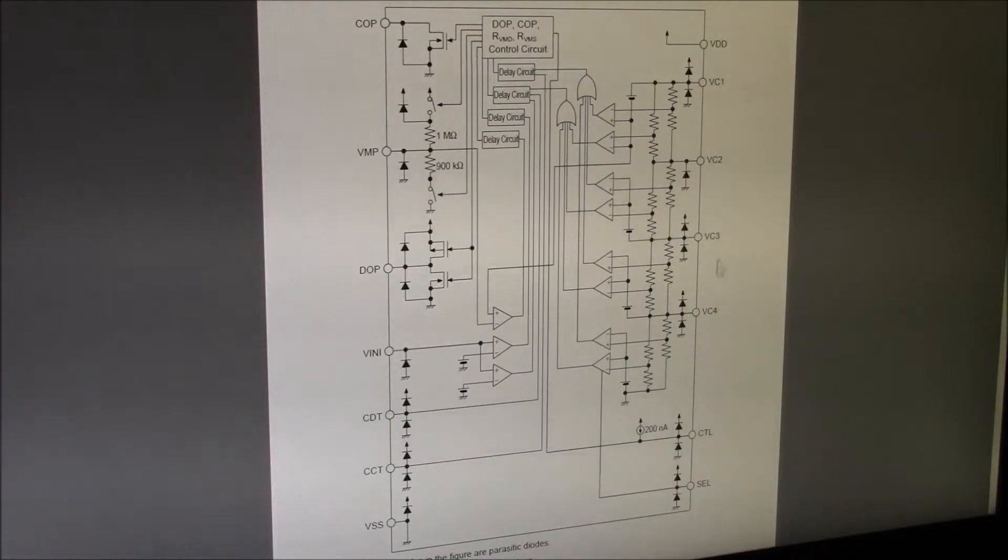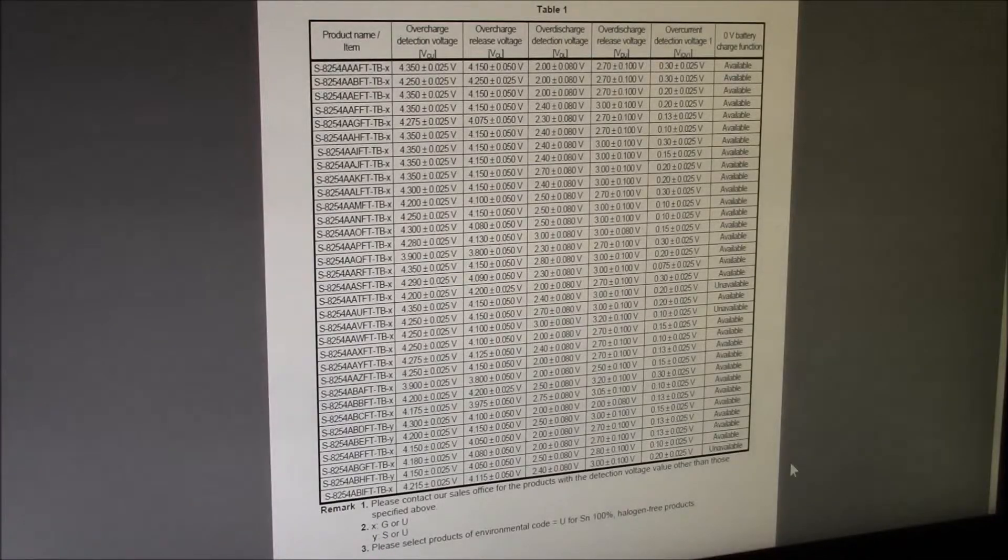You can see here are the four cells VC1, VC2, VC3, VC4, and then there's resistor divider networks, and again all this is internal to the IC. You can see table one has a lot of information here.